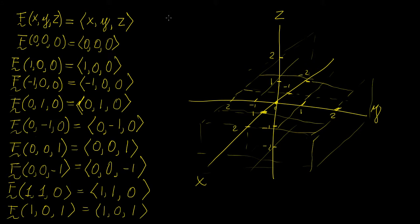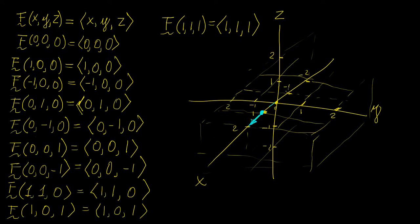And then let's do one more: (1, 1, 1). Now let's start drawing some of these vectors. The first thing you want to do is start with the simple one — this one moves one unit along the positive x direction and has no other components, so it goes like this. You start off at this point and then move one unit. Then for (-1, 0, 0) you start off at minus one and move one unit along the x-axis in the negative direction.